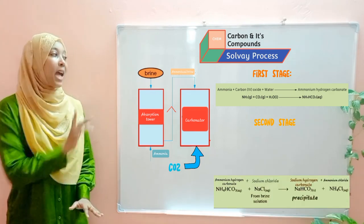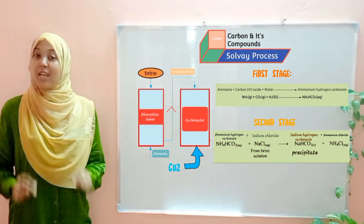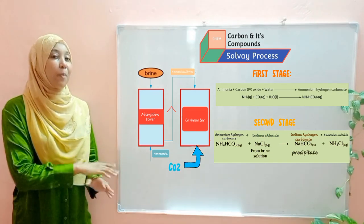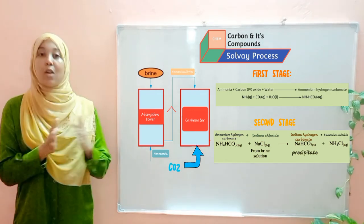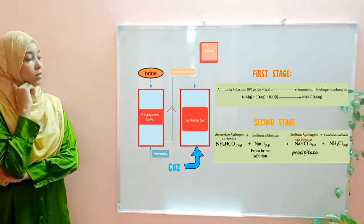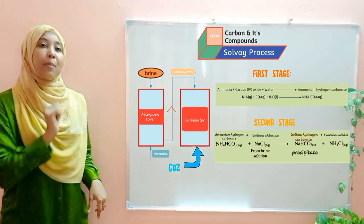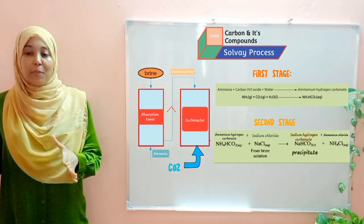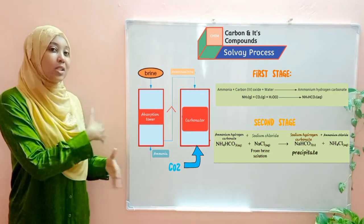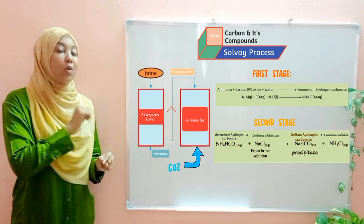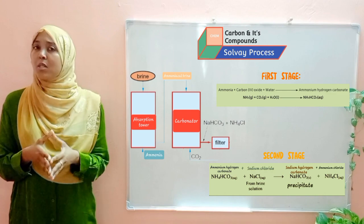In the second stage, the ammonium hydrogen carbonate that has just been formed reacts with sodium chloride, which was present in the brine. Sodium chloride reacts with ammonium hydrogen carbonate to form ammonium chloride plus sodium hydrogen carbonate. If you look at the reactants and products, you'll notice there was a switch of ions — this is a perfect example of a double displacement reaction, where cations and anions exchanged to yield the two products.